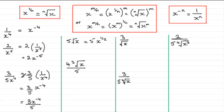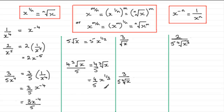In the next example, we combine a fraction with a cube root. We see this as 4 fifths multiplied by the cube root of x. For the cube root, n is 3, so we get x to the power 1 over 3. That gives us 4 fifths multiplied by x to the power one third. You could leave it in that form, or rewrite it as 4x to the power one third all divided by 5 — both are the same.